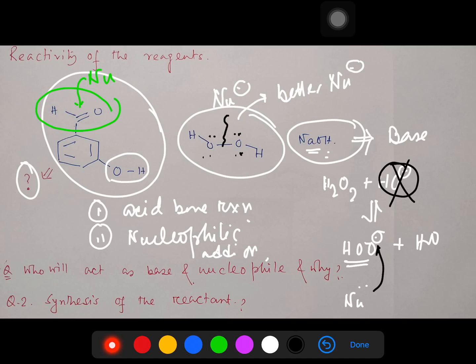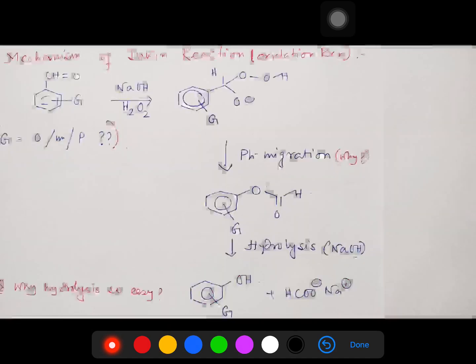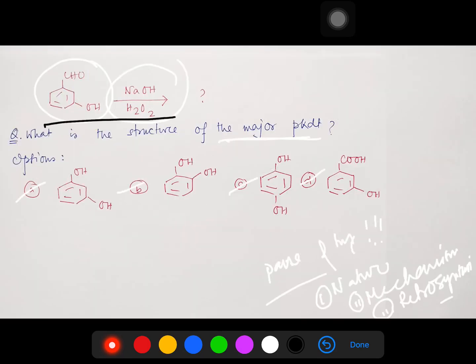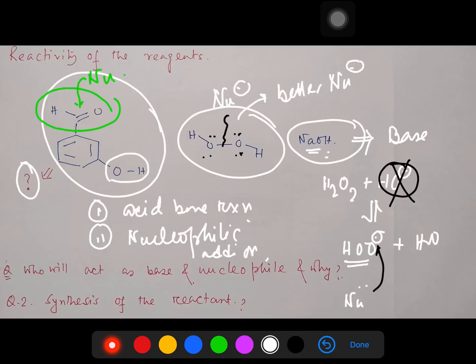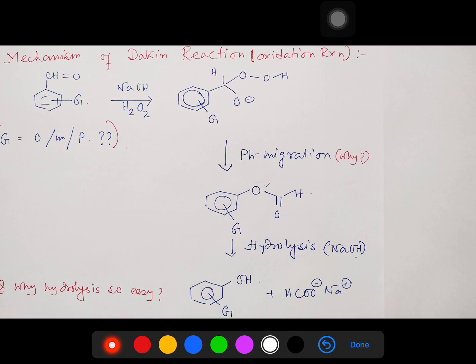So we have understood the basic part. Now let's learn a little bit about the Dakin reaction, because the conditions provided here are nothing but the conditions for the Dakin reaction. In the Dakin reaction, we take ortho and para hydroxyl-substituted benzaldehyde derivatives and react with hydrogen peroxide — an oxidation reaction occurs and ultimately produces a phenol derivative.